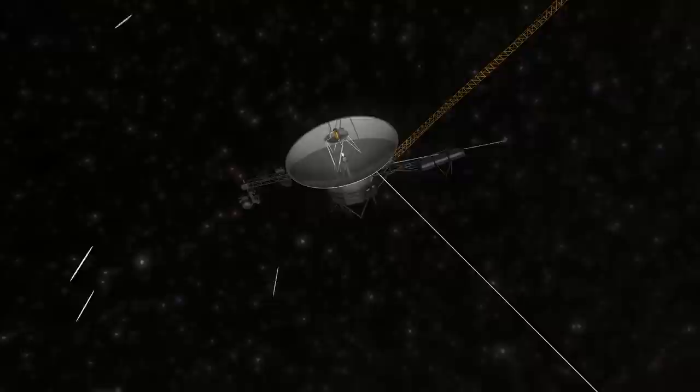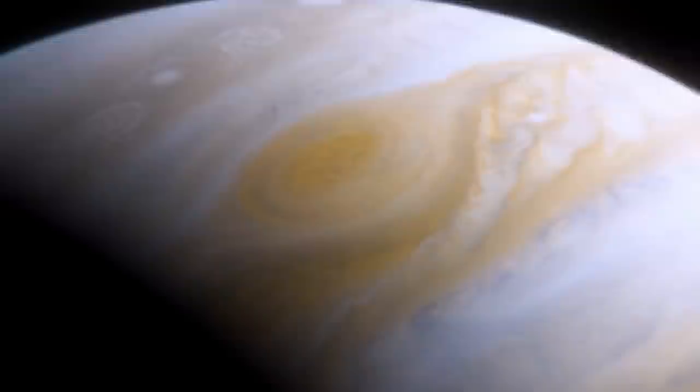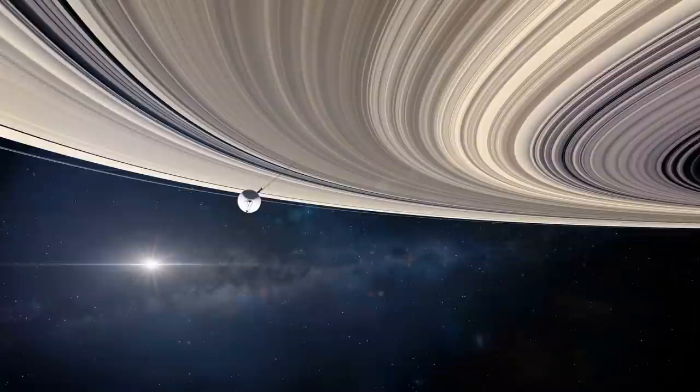The Voyager program discovered almost all we knew of these four planets today. Some of the most impressive discoveries from the program include the Voyager 1 being the first human-made object to go into interstellar space. It also found a thin ring surrounding Jupiter and two new moons of Jupiter, Thebe and Metis. In Saturn it found the G ring and five moons.